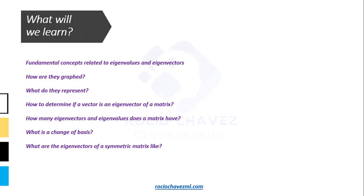The topics to be discussed today are some general concepts about the technique called eigendecomposition, which is used to obtain the eigenvalues and eigenvectors of a matrix. We will see how they are graphed, what they represent, how to determine if a given vector is an eigenvector of a matrix, how many eigenvalues and eigenvectors a matrix has. In addition, we will understand the concept of change of basis and know what is special about the eigenvectors of a symmetric matrix compared to those belonging to a non-symmetric matrix.